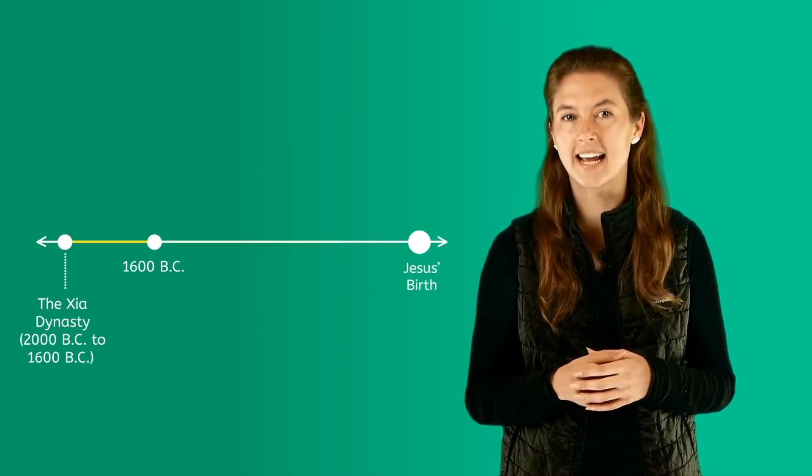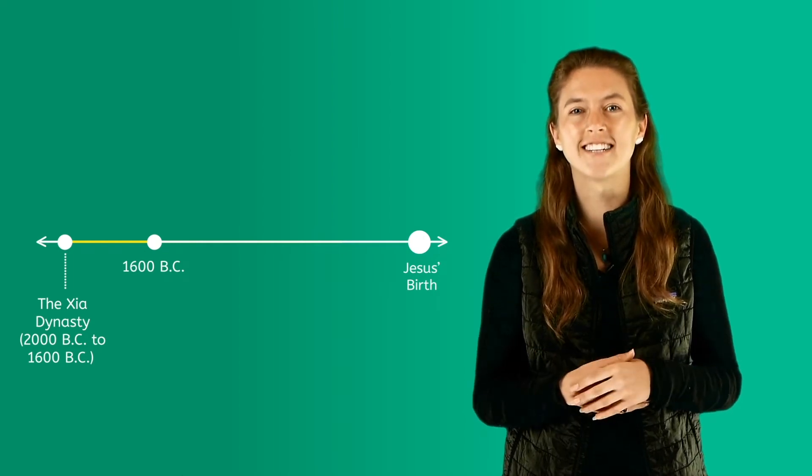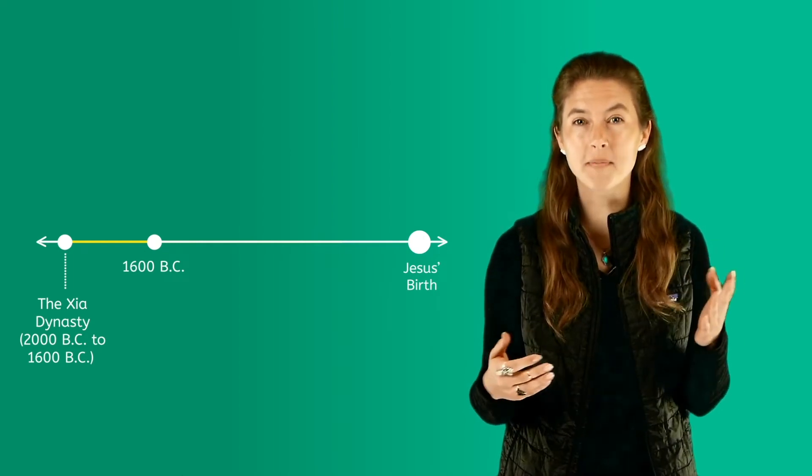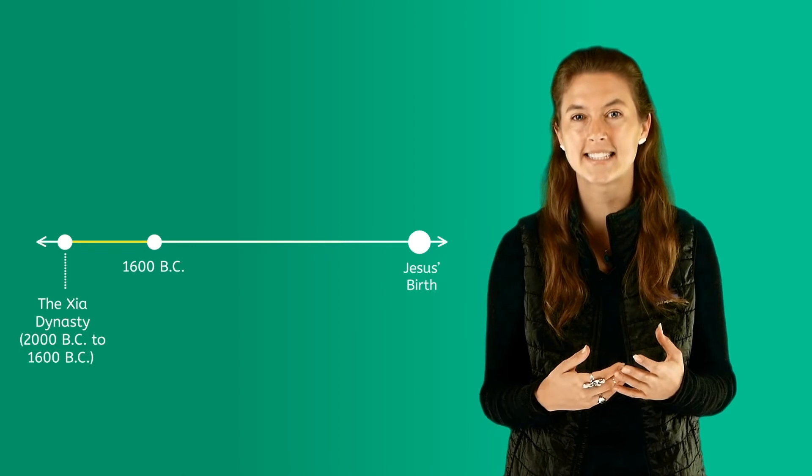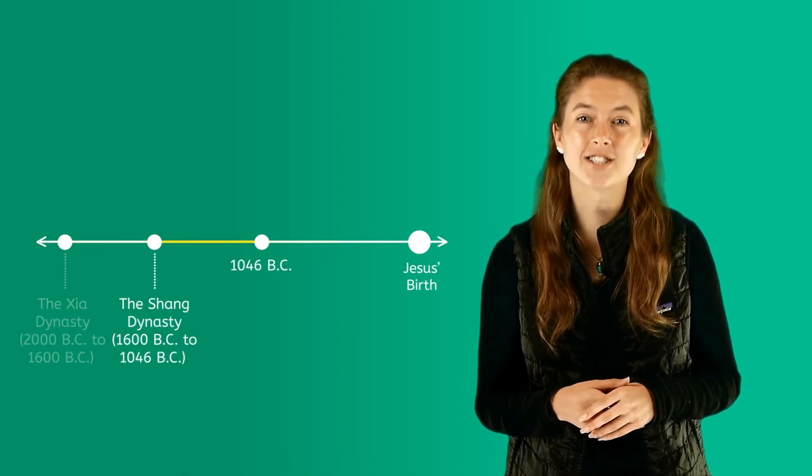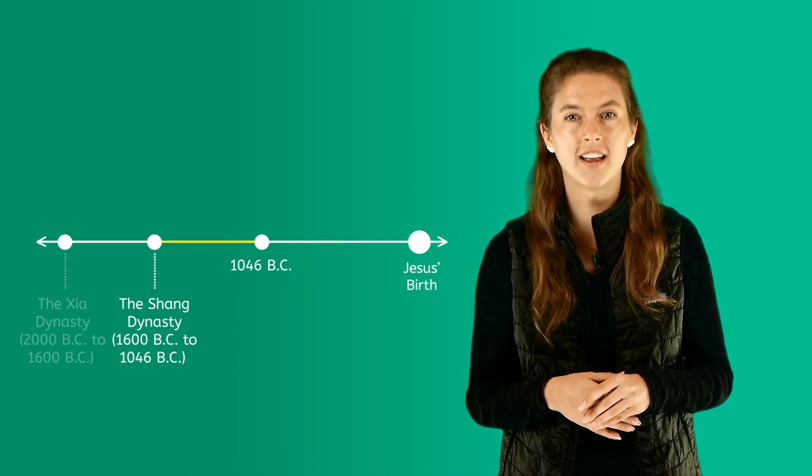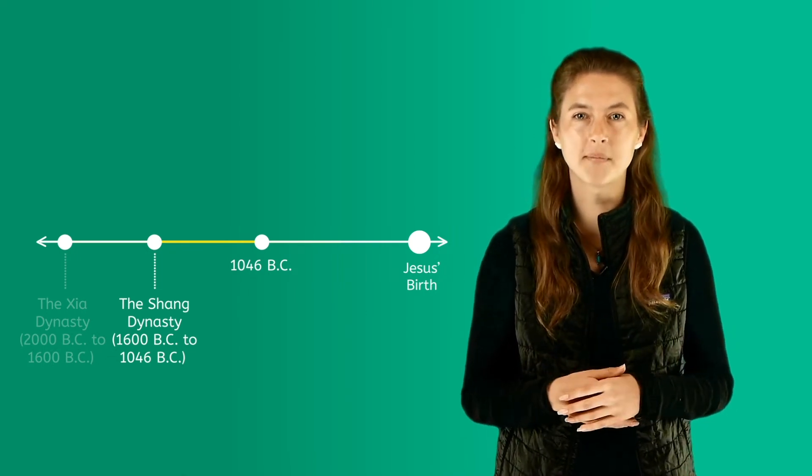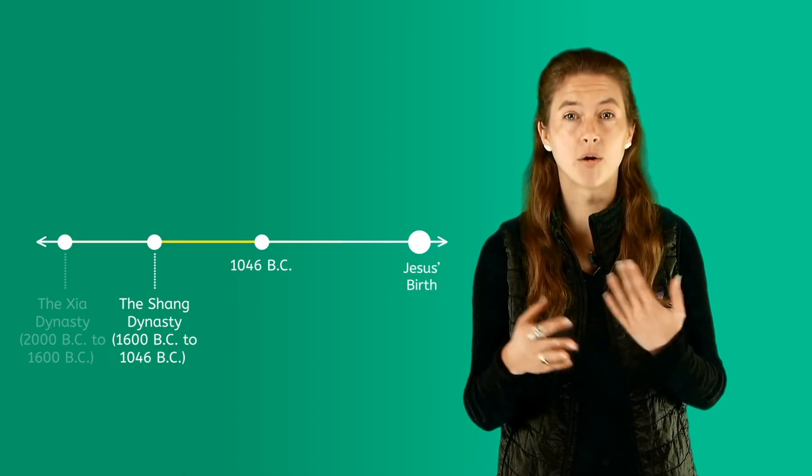What we now know about the Xia dynasty comes from written records that were found dating all the way back to the period when the second dynasty, the Shang dynasty, existed. Some historians actually don't think the Xia people were real and that they were made up by the Shang people as sort of a myth or folk tale.